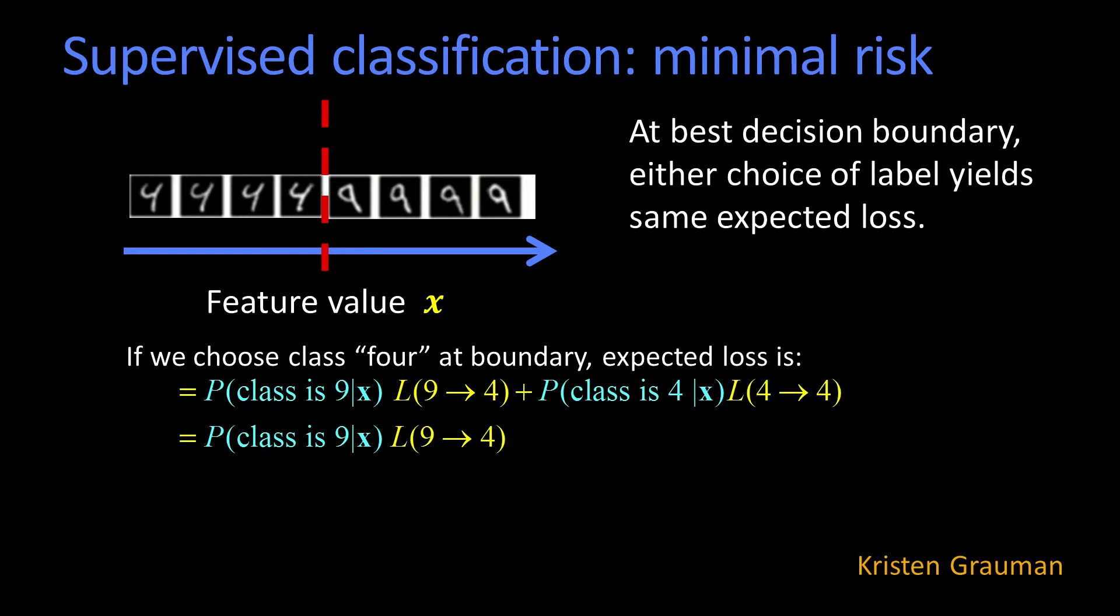Well, that means that this just reduces down to, if I'm at this location x, what's the probability it's really a nine, and the cost of calling the nine a four? That's the expected loss of saying four at that location.